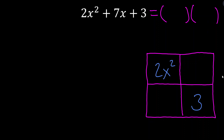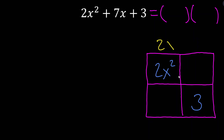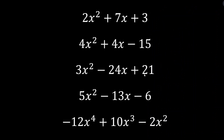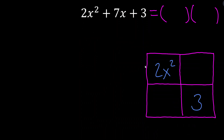One thing we could do is a guess-and-check method, especially with 2 and 3 each being prime. You could say 2x goes here and x goes here, then experiment with 3 and 1. That's totally fine but that's not really the Xbox method. I like the Xbox method because we'll see examples where the numbers get bigger and aren't prime — like 4 and 15 — with a lot of different possibilities. I want a method that is clear-cut and always works, and that's what the Xbox method gives us.